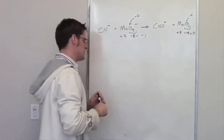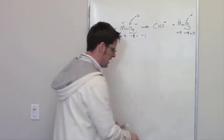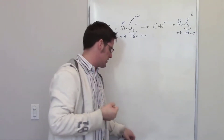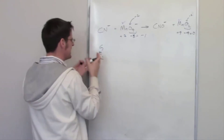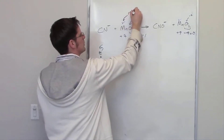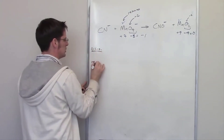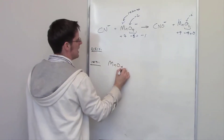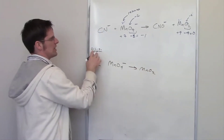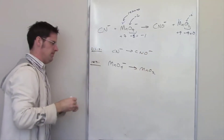Manganese changes from plus seven to plus four going left to right — it's becoming more negative, which means it gains electrons. Gaining electrons means being reduced. So manganese is reduced. I'll write out my two half reactions: the reduction is MnO₄⁻ converting into MnO₂, and the oxidation by default is whatever's left — cyanide (CN⁻) being turned into CNO⁻. That is step one.